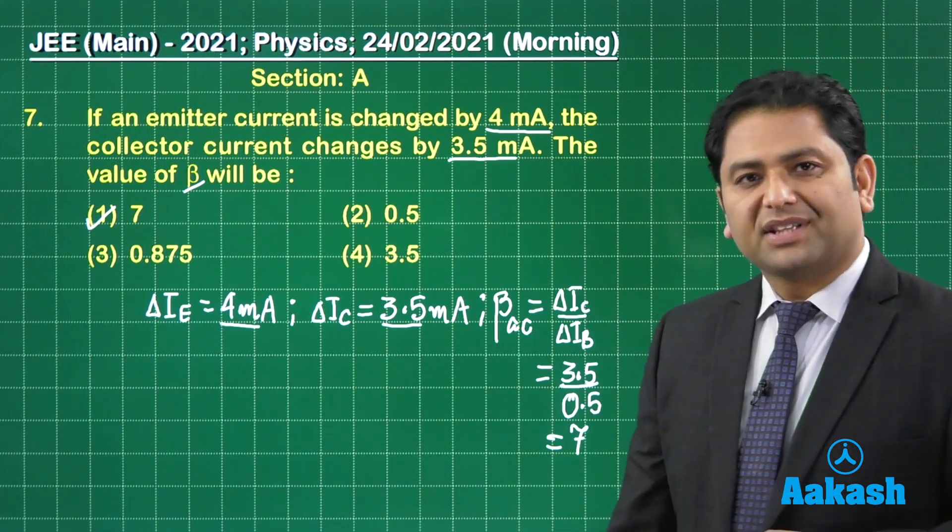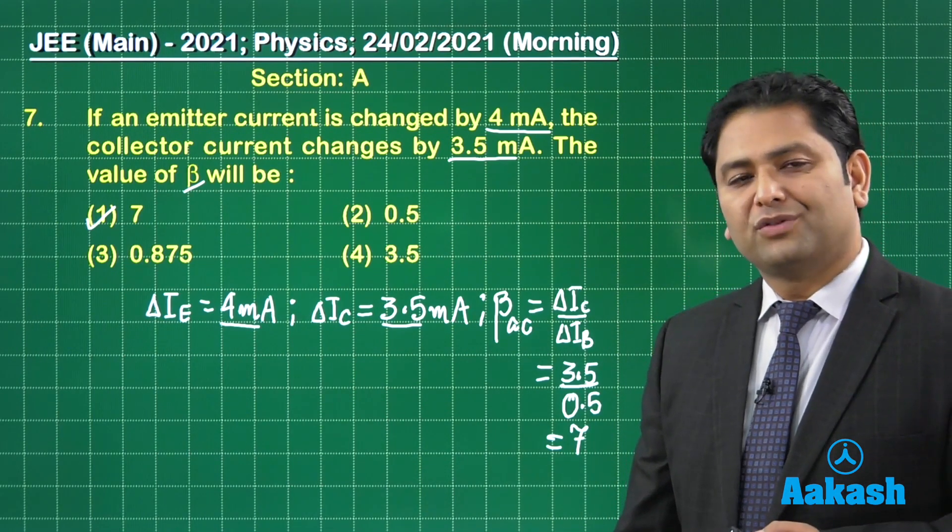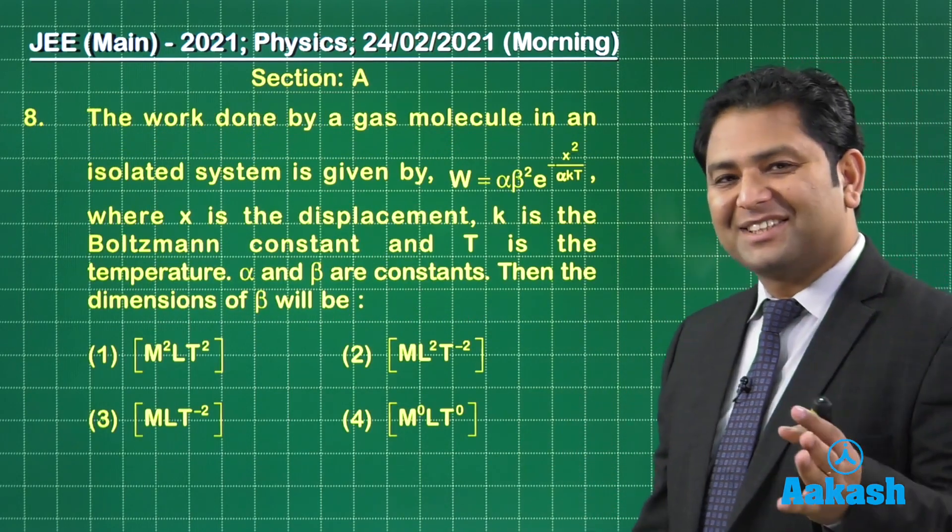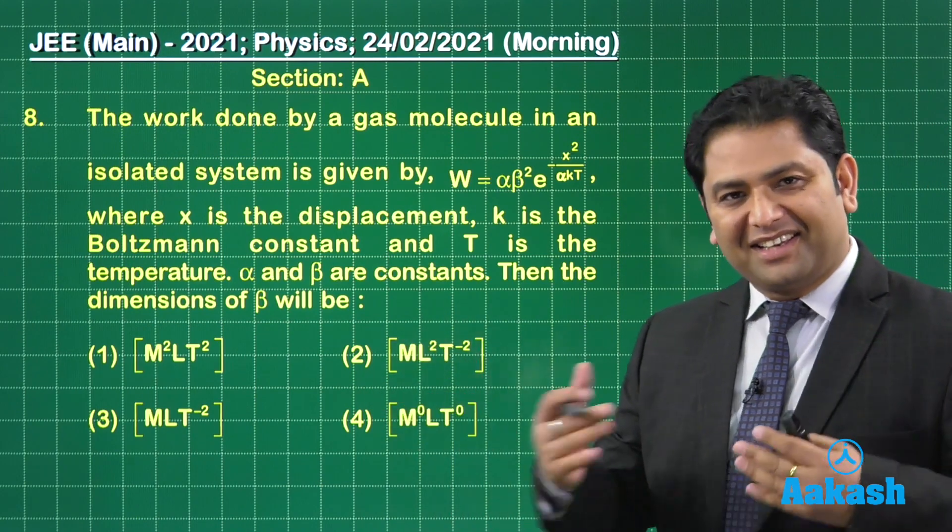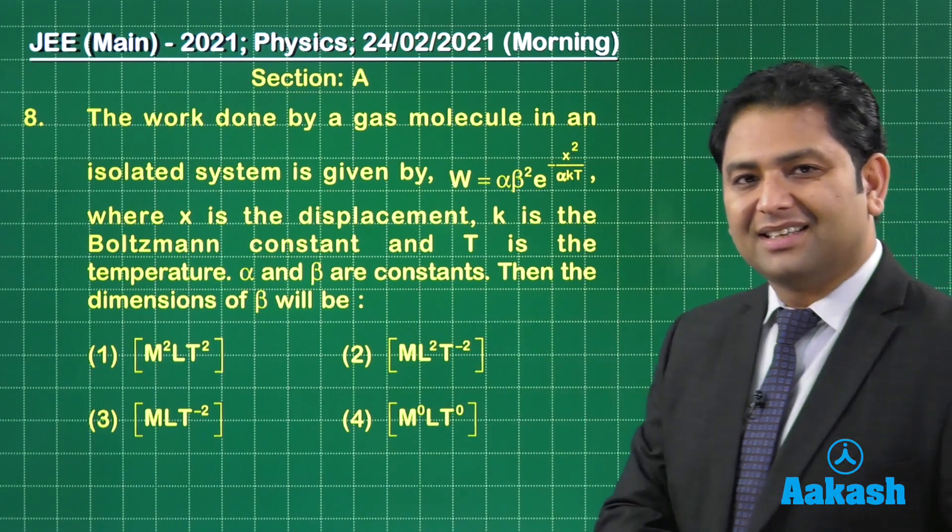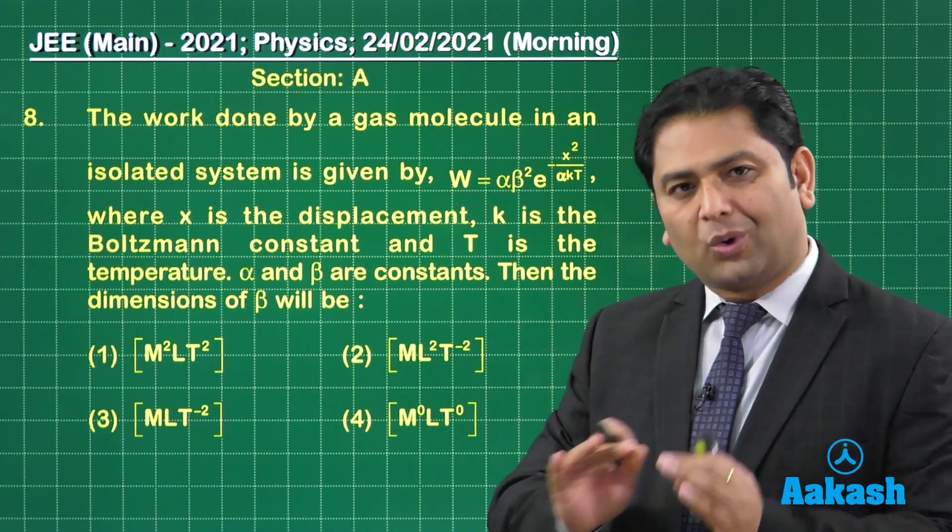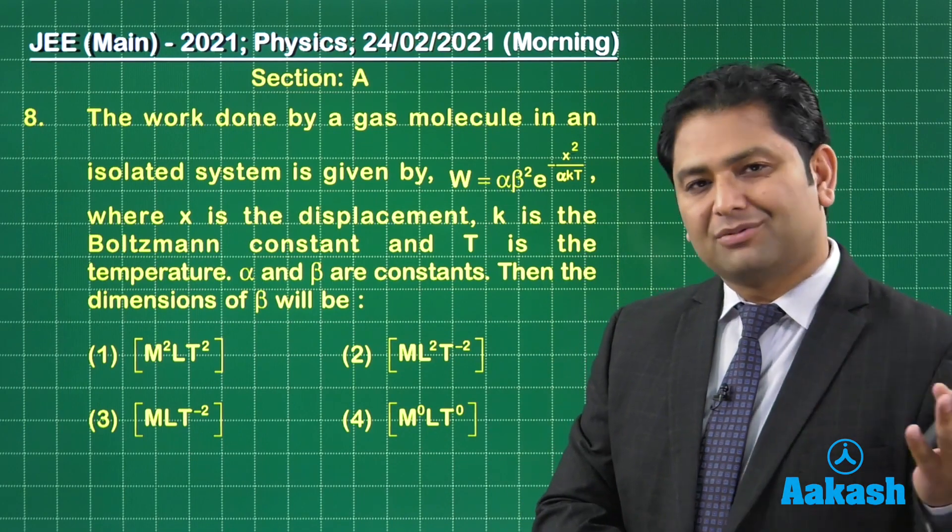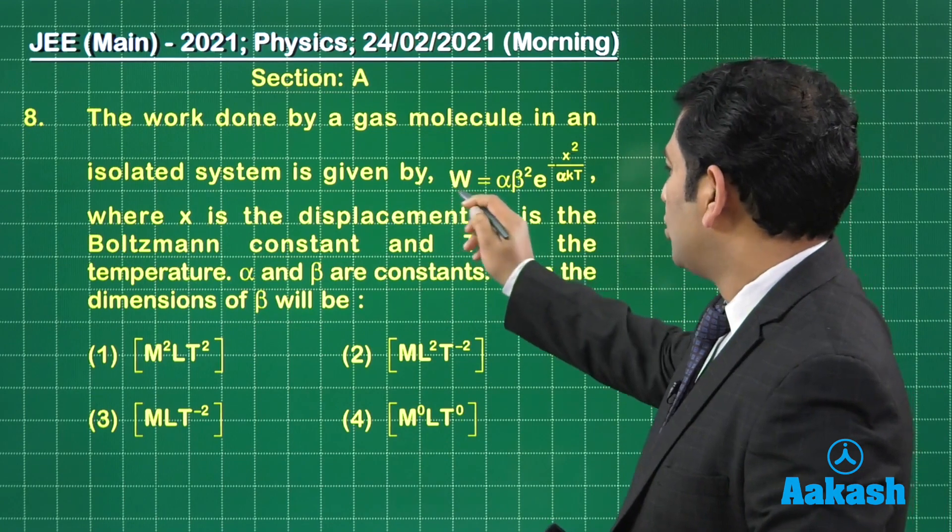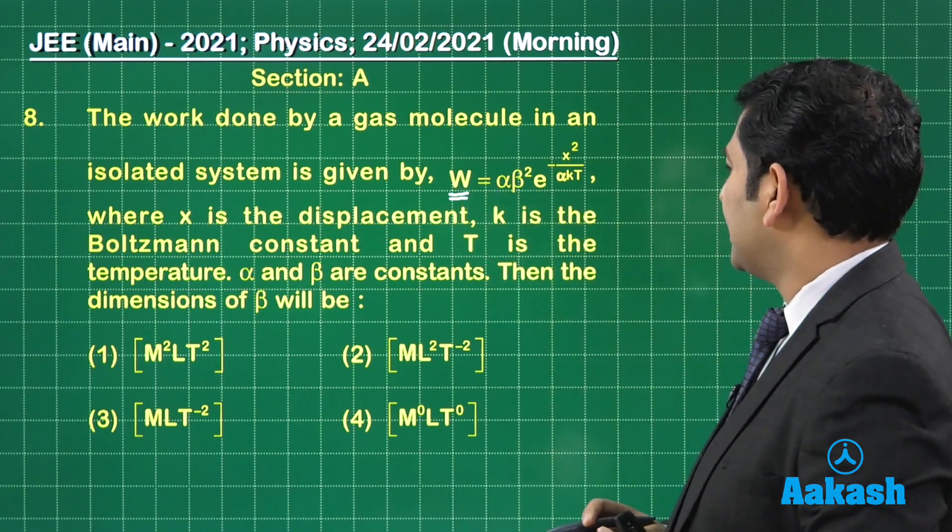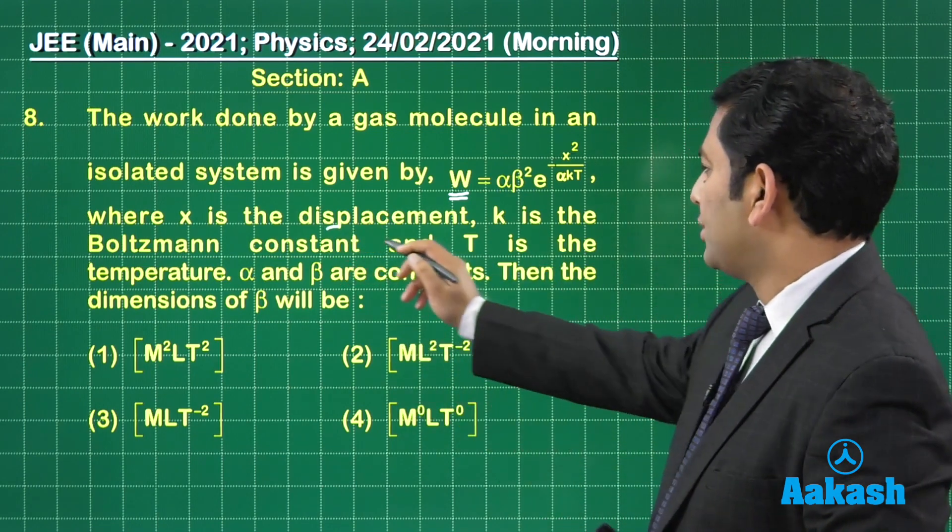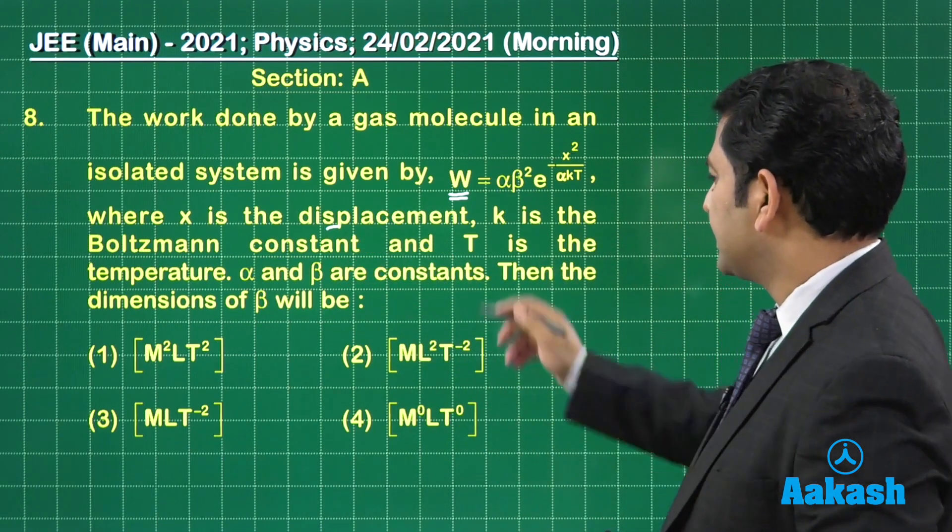That was the seventh question. Now it's time we move to question number 8. JEE Main is living up to its reputation because unit and dimension is a chapter where it's almost a guarantee you would get a question. W is the work done, alpha and beta are unknown, X is the displacement.